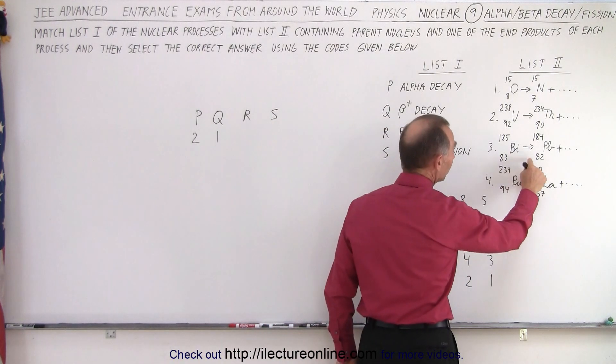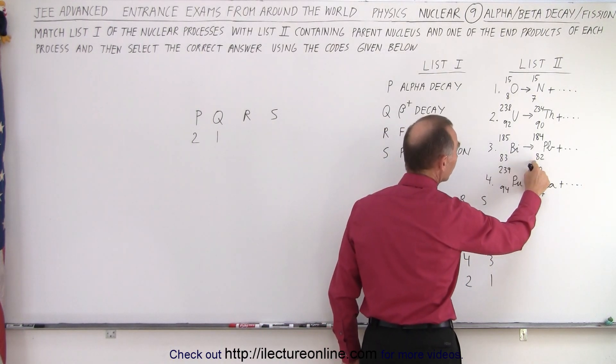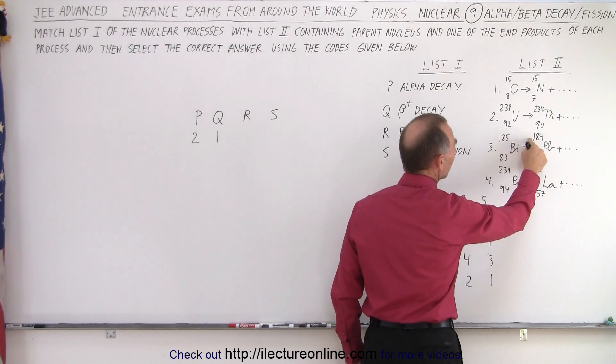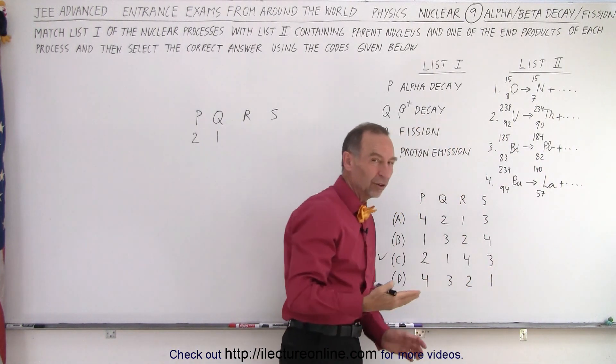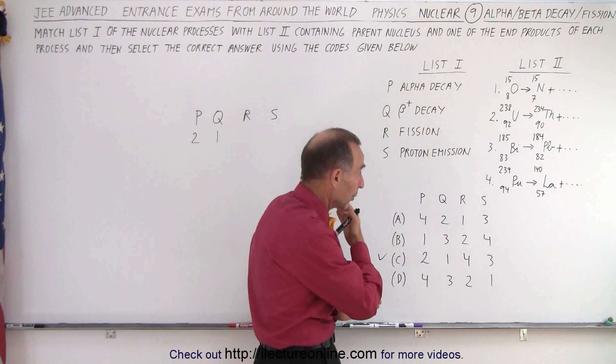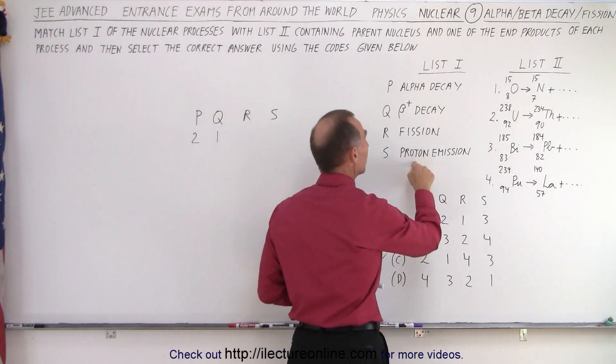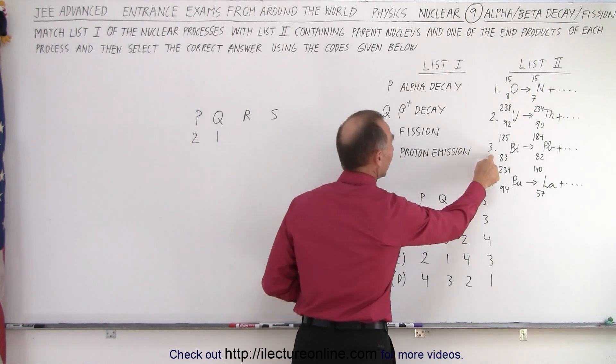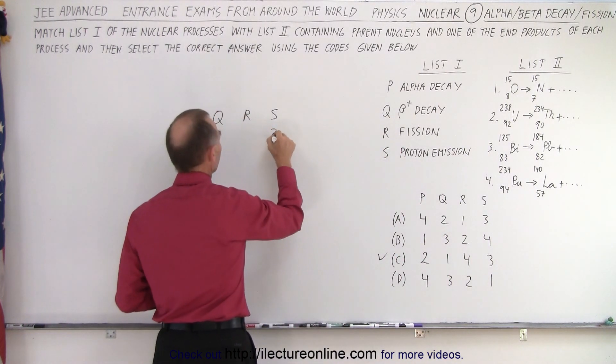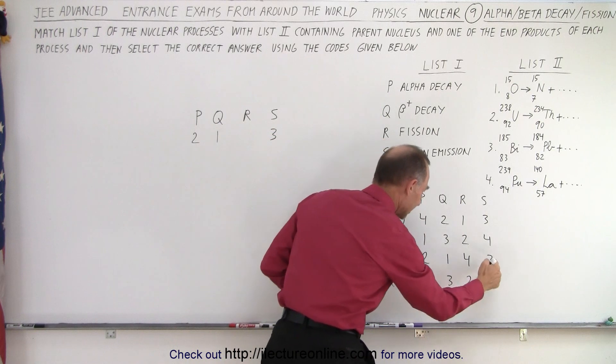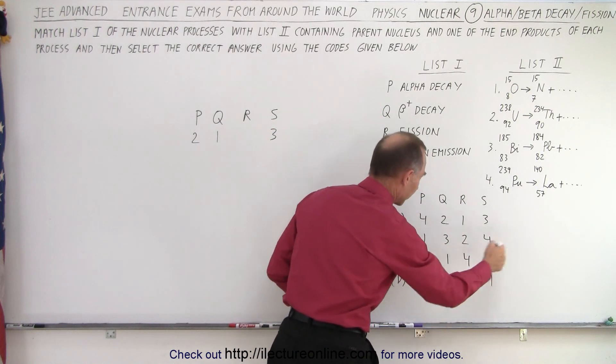Notice we're losing one proton. We're going from 83 to 82 and we're losing one nucleon. So the only nucleon we're losing is a proton which means we're removing a proton. The number of neutrons remains the same. So that would be considered proton emission. So that means S and 3 are paired up. So put a 3 there and notice that yes, indeed, S is paired up with 3 in our correct answer.